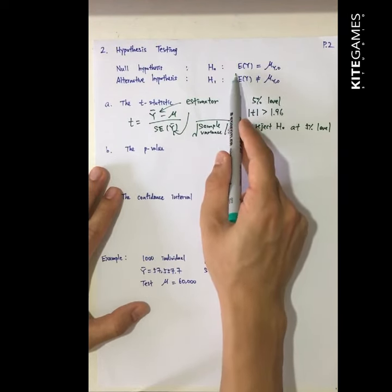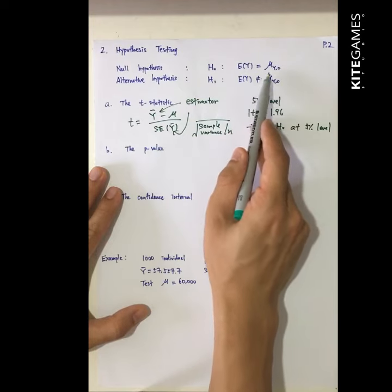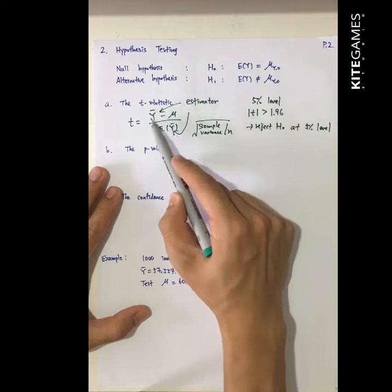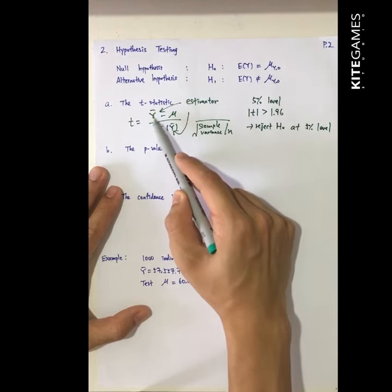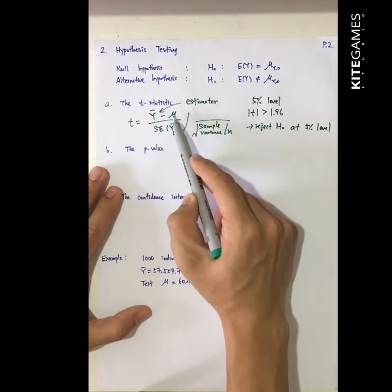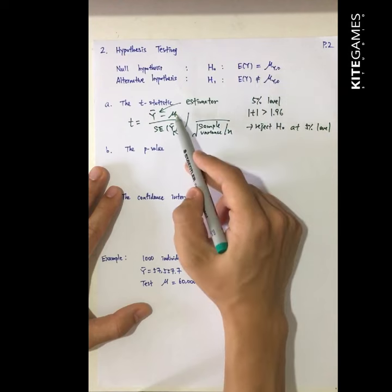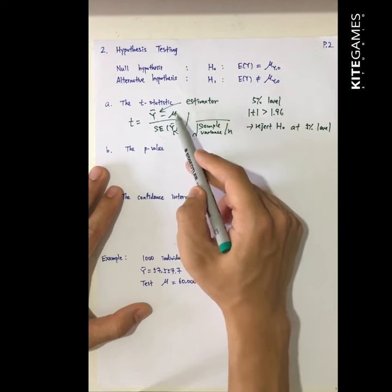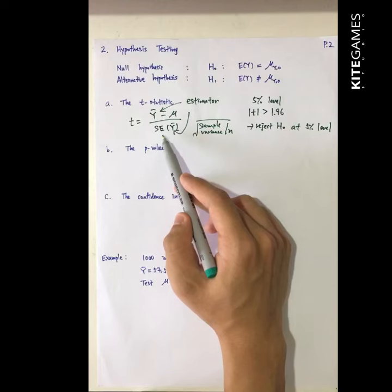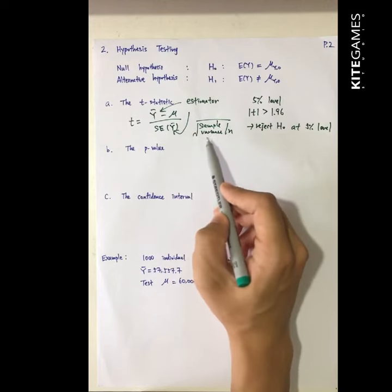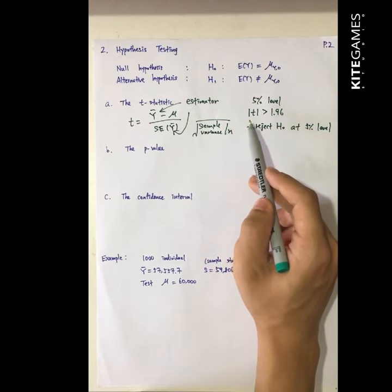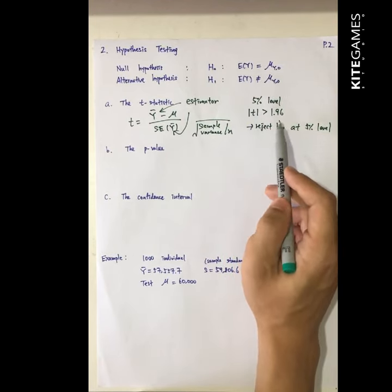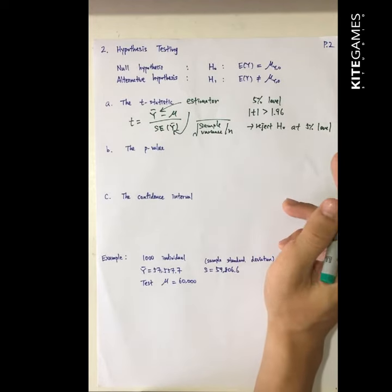So if you want to see whether the expected salary equals some value, you collect the data and compute the sample average of salary, then subtract mu — the number you want to test, maybe 10,000 dollars — and divide by the standard error, which is the sample variance divided by n and then take the square root. After that, if the calculated value is greater than 1.96, you reject the null hypothesis. The step is very simple.